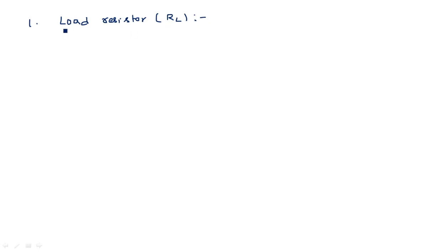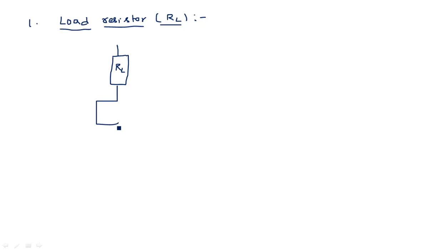The first case is a resistive load. In place of the pull-up we have a load resistor RL. The input is applied to the NMOS transistor and the output is taken from the node between RL and the transistor, with VDD connected through the resistor. This resistor RL acts as the pull-up.